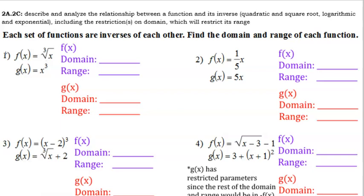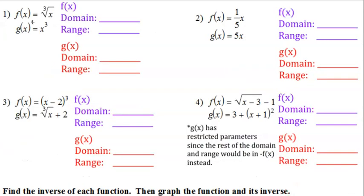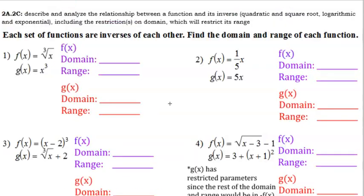This video will be over the Algebra 2 topic 2c: describe and analyze the relationship between a function and its inverse, quadratic and square root, logarithmic and exponential, including the restrictions on domain which will restrict its range. Each of these four pairs are inverses of each other. All you have to do with them is find the domain and range for each of them.